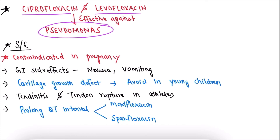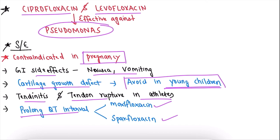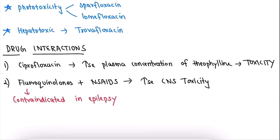Regarding side effects of fluoroquinolones: the most important point is that fluoroquinolones are contraindicated in pregnancy. GI side effects include nausea, vomiting, and abdominal discomfort. They cause cartilage growth defects, so we should avoid fluoroquinolones in young children. They also cause tendinitis and tendon rupture in athletes, and prolong the QT interval — particularly moxifloxacin and sparfloxacin.